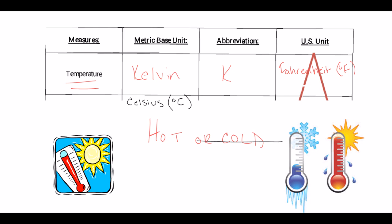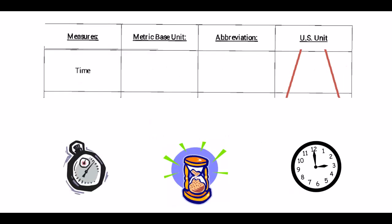Time is one of those things that is universal to us. Our base unit for time is going to be seconds. We abbreviate s. There is nothing that we put in for the US unit because time is universal across the entire globe.